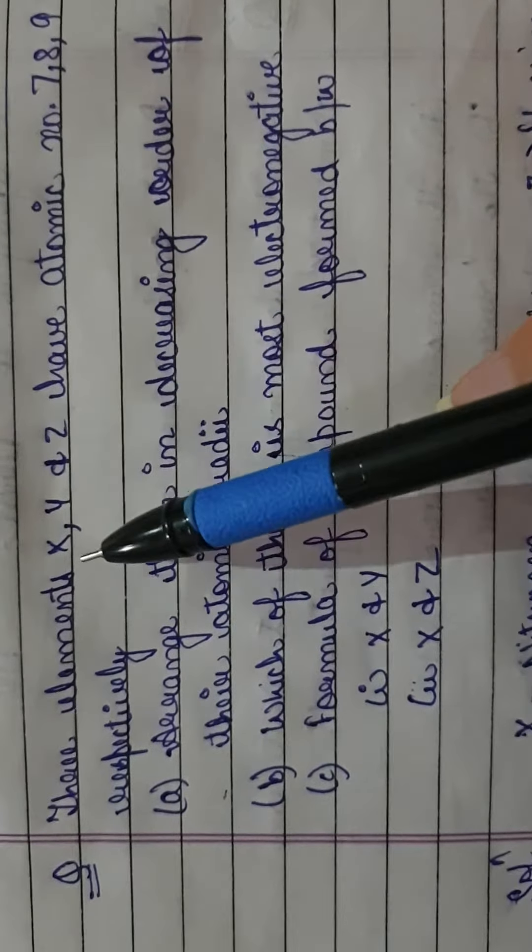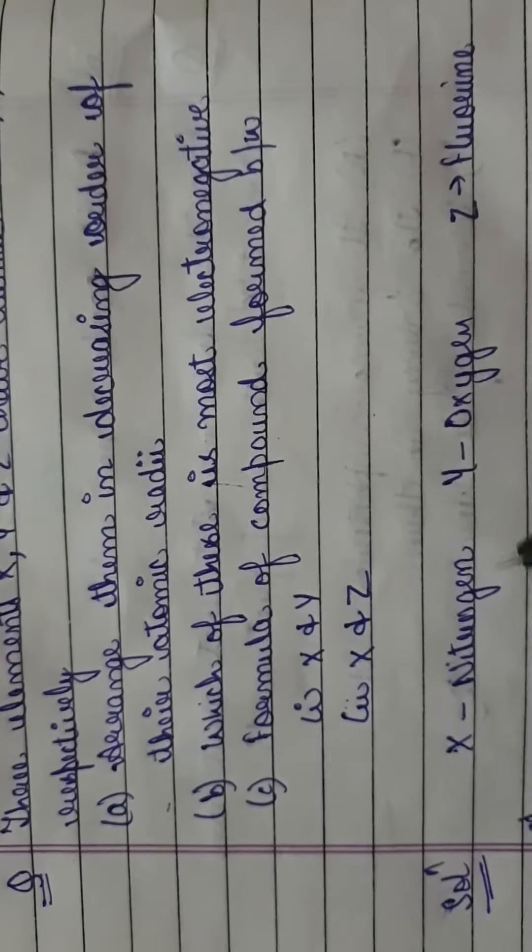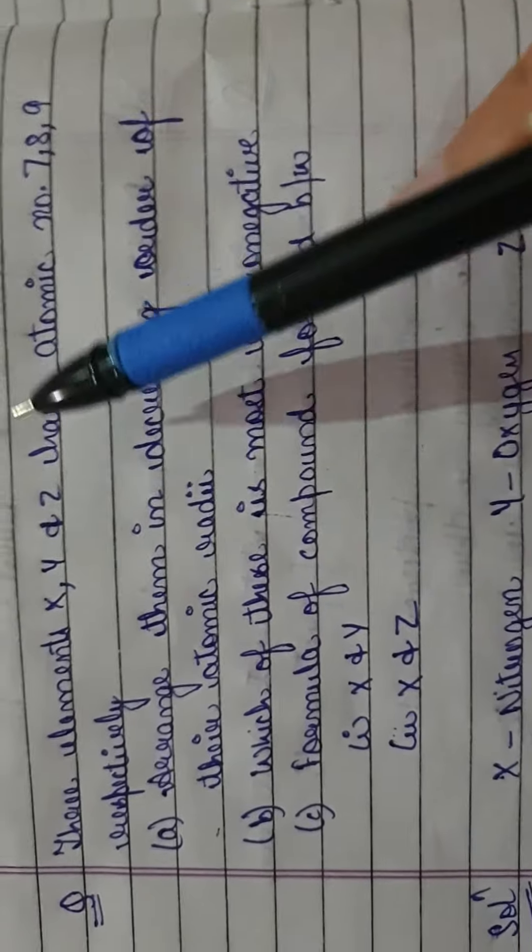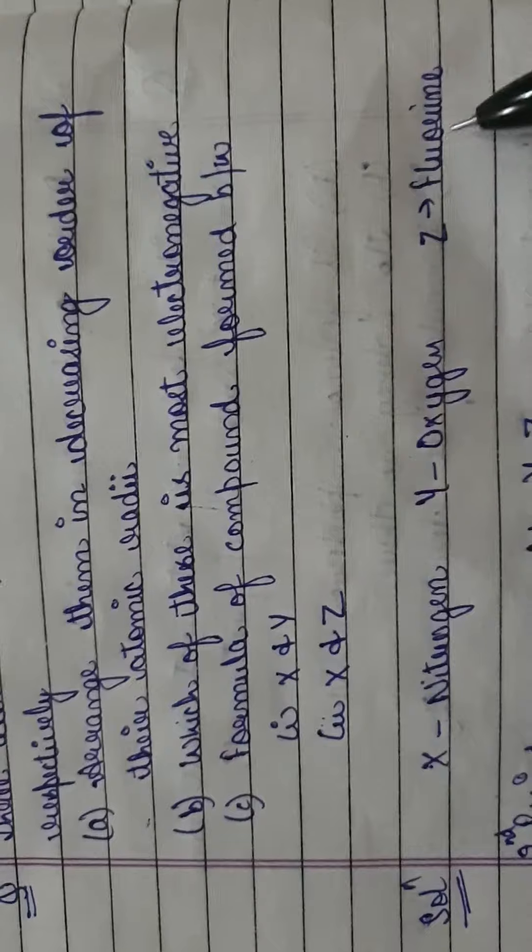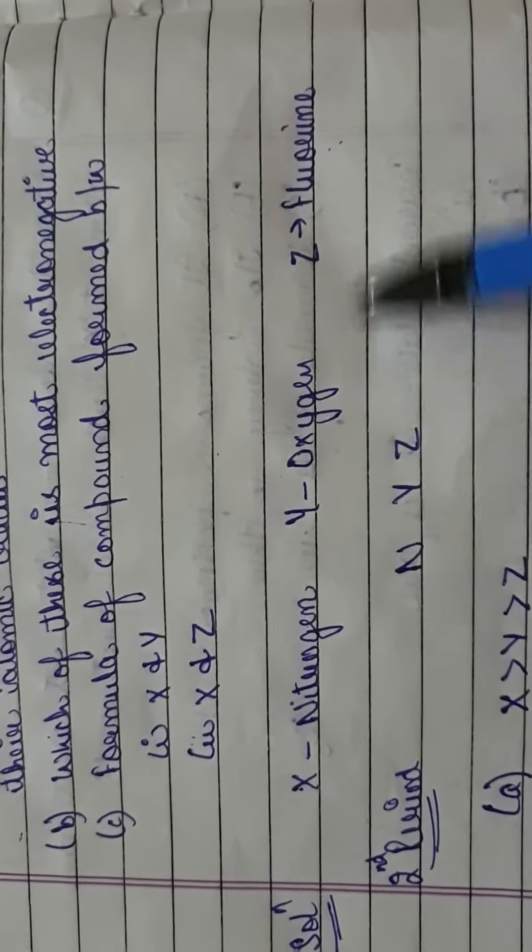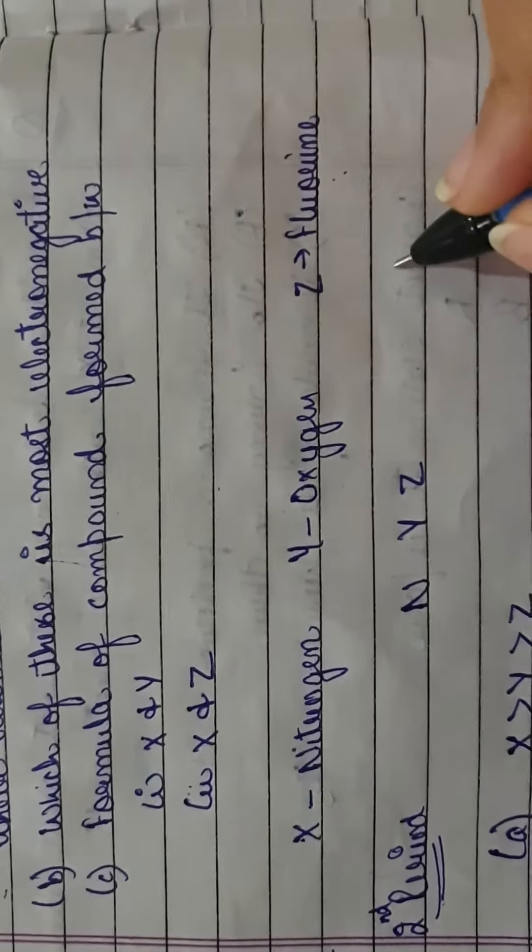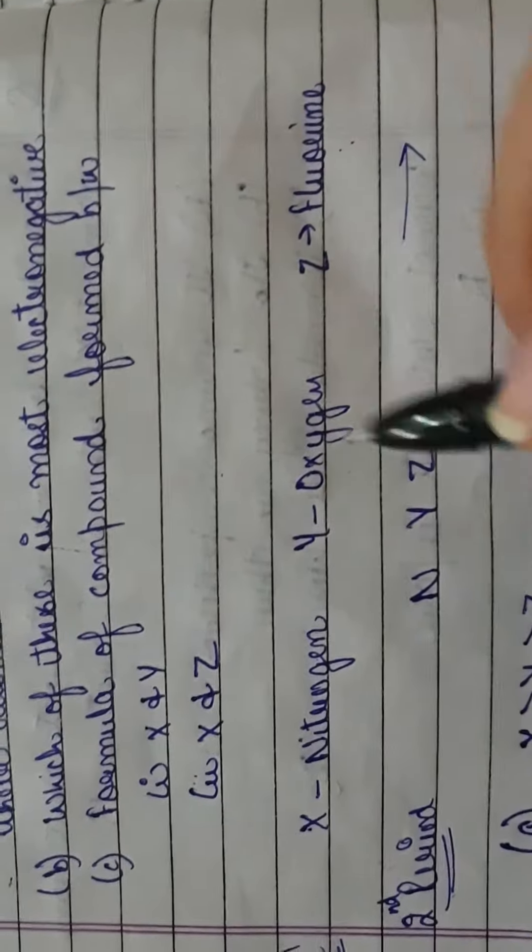X has atomic number 7, so nitrogen. Y is oxygen (8). Z is fluorine (9). These three elements are in the second period.